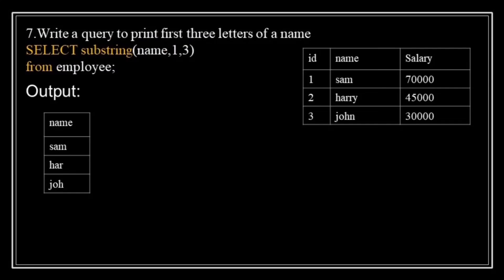Write a query to print the first three letters of a name. To solve this, we use the SUBSTRING function: SELECT SUBSTRING(name, 1, 3) FROM employee. SUBSTRING(name, 1, 3) starts from the first letter and takes the next three letters. So if the employee table has names like Sam, John, and Harry, the result will show the first three characters of each name.